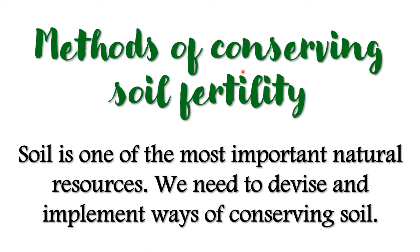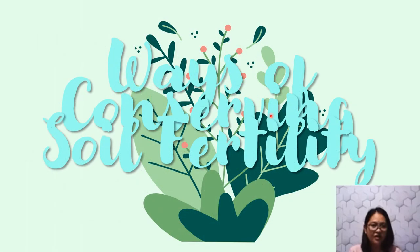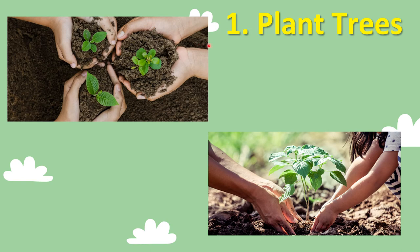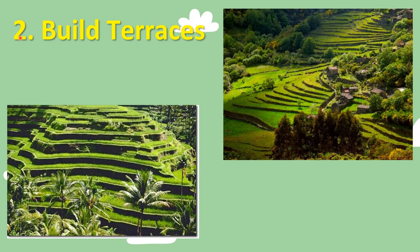Now, let's proceed to the methods of conserving soil fertility. Soil is one of the most important natural resources, and we need to devise and implement ways of conserving it. Number one, plant trees — roots of trees firmly hold on to the soil; as their roots spread deep into the layers of soil, they hold it tightly, thus preventing soil erosion. Number two, build terraces — terracing is a very good method of soil conservation; it gives the landmass a stepped appearance, thus slowing the washing down of soil.